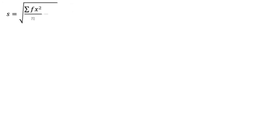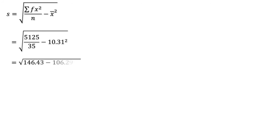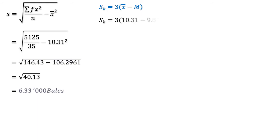Standard deviation = √(Σfx²/n − x̄²) = √(5125/35 − 10.31²). The division is 146.43, the square of x̄ is 106.30, the difference is 40.13, and the square root gives SD = 6.33 thousand bales. Now putting the values of mean and median into the skewness formula: 3 × (10.31 − 9.86) = 3 × 0.45 = 1.35 thousand bales.